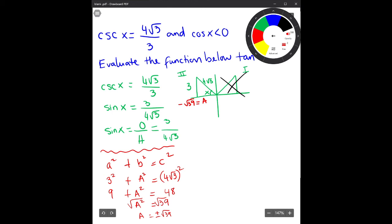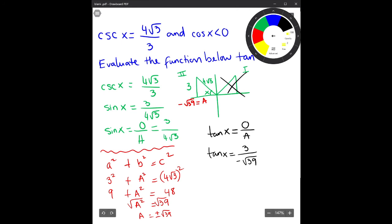Now we can find tangent of x. Tangent x equals opposite over adjacent, so tangent of x equals 3 over negative √39. We rationalize the denominator by multiplying top and bottom by √39, giving us negative 3√39 over 39. Simplifying one more time, the final answer is negative √39 over 13.